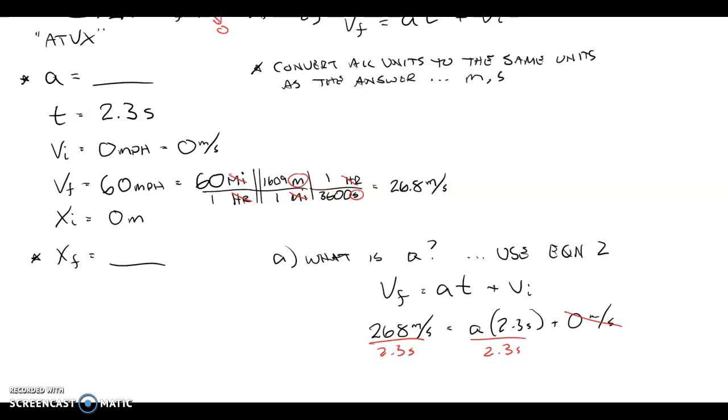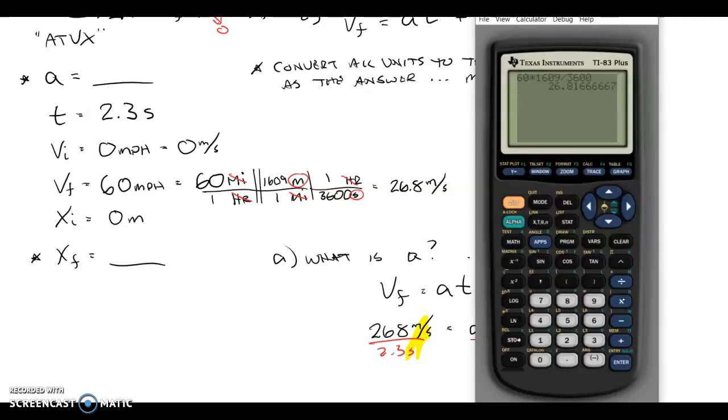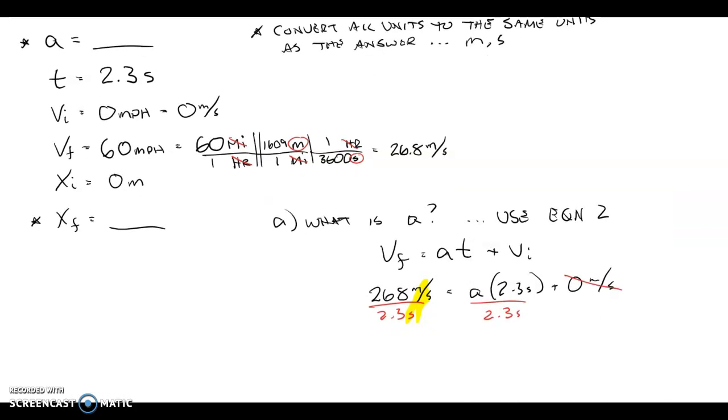Notice what happens. My units become meters per second per second, which is the same as meters per second squared. So, I can take 26.8, divide by 2.3, and I get 11.66 meters per second squared.